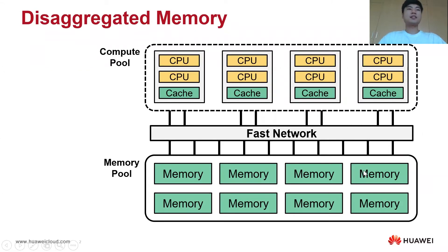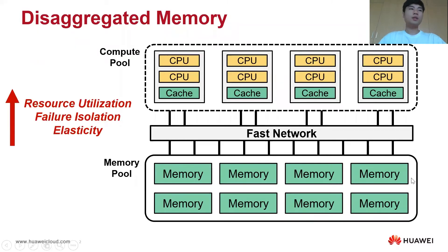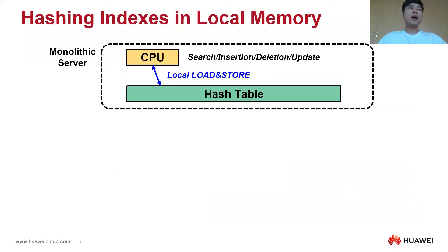Memory disaggregation has attracted extensive attention from both industry and academia. As shown in this figure, it decouples monolithic memory and compute resources in data centers and forms independent compute and memory resource pools. Due to resource pooling and independent hardware deployments, disaggregated memory brings the benefits of improving resource utilization, failure isolation, and elasticity. On the other hand, distributed in-memory hash index has become a fundamental building block in many data center applications. Our paper focuses on designing an efficient hash index for disaggregated memory.